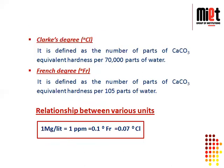The third unit is degree Clark. It is defined as the number of parts of calcium carbonate equivalent hardness dissolved in 70,000 parts of water. The fourth unit is degree French, defined as the number of parts of calcium carbonate equivalent hardness per 10 to the power 5 parts of water.